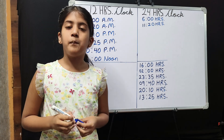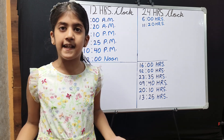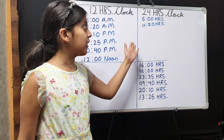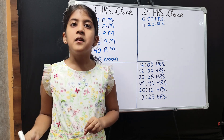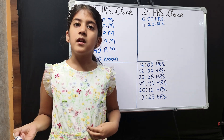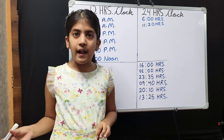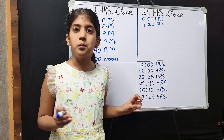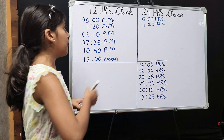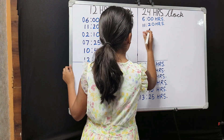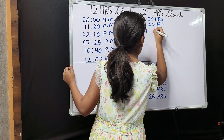2:10 PM. Now, 2:10 PM is a time in PM. How do I change it to 24-hour clock? When we have a PM time to change, we add 12 to the hours. Here the hours is 2, so we will add 12 to 2. 2 plus 12 is 14. And I will write the minutes as it is and put hours. So my answer is 1410 hours.